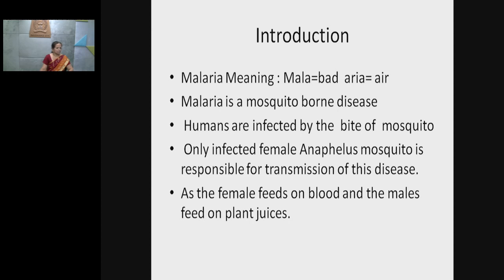Malaria is a mosquito-borne disease and humans are infected by the bite of a mosquito. Only the infected female Anopheles mosquito is responsible for transmission of this disease, because the female mosquito feeds on the blood of vertebrates, while males feed on plant juices.